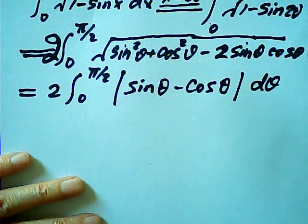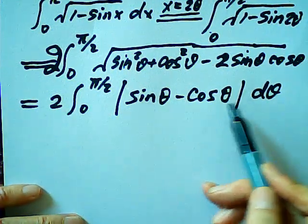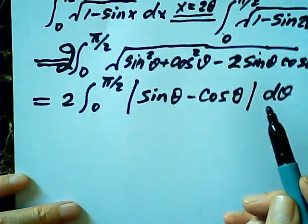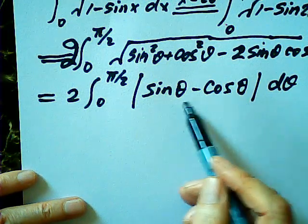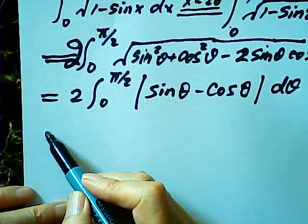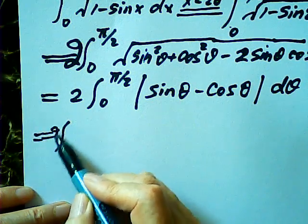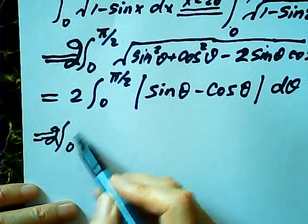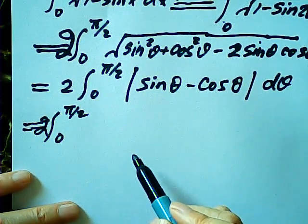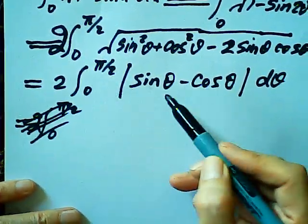dθ. Now, we are taking the absolute value, so we're taking the positive value. Between zero to π/2, we need to determine the positive or negative sign of this difference, so we split into two parts. Because we cannot use one single integral — we have to separate into two to guarantee both are positive.